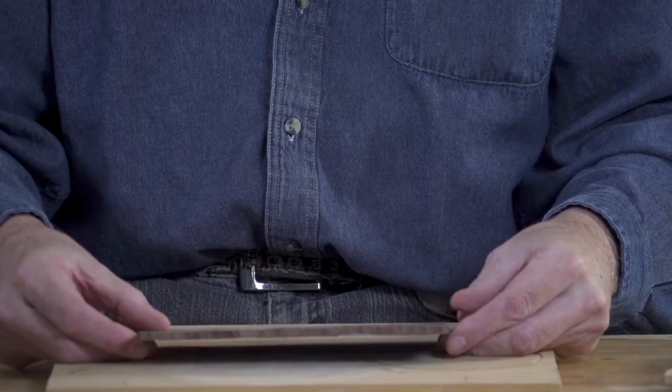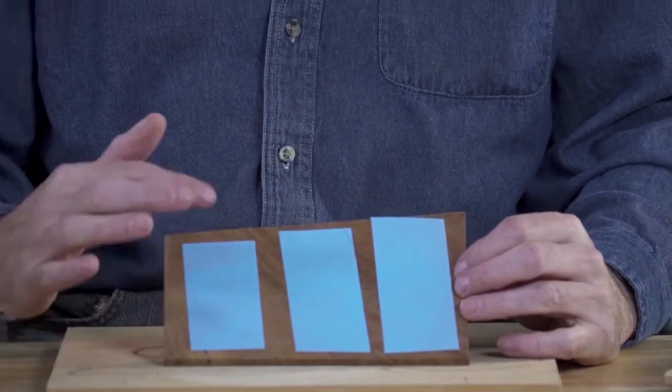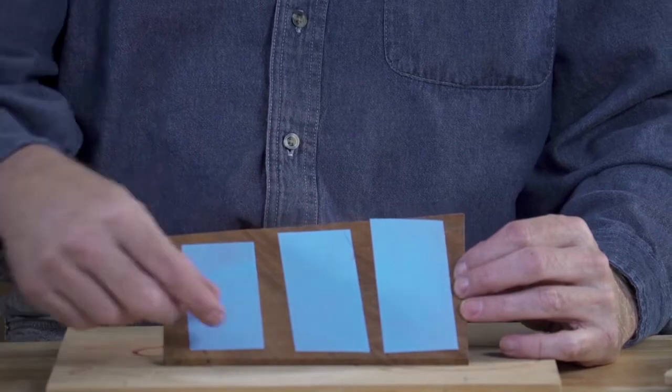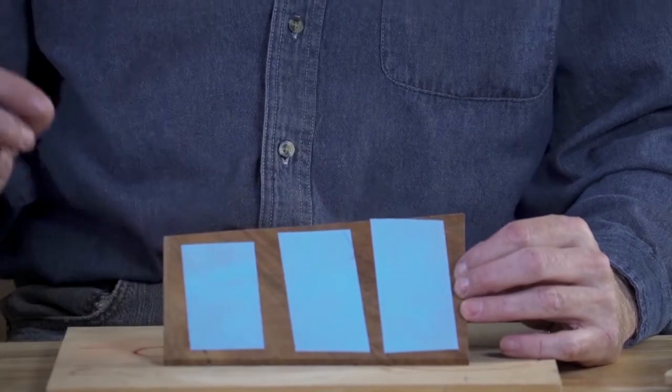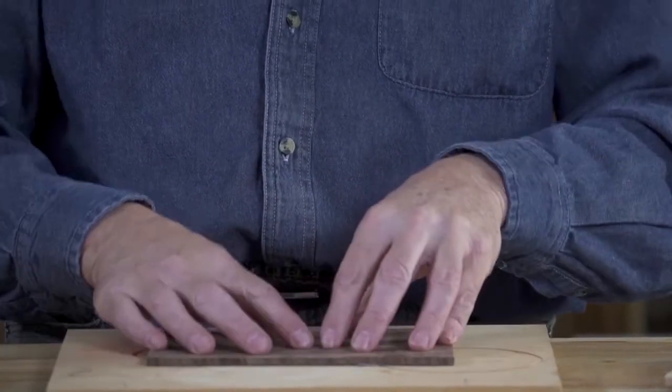First thing you need to do is prepare your inlay materials. All you really have to do is put double-sided tape on the backside of the inlay material, peel off the vinyl, and then stick it to the backing material.